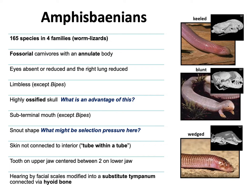Let's talk about the amphisbaenids. These are otherwise known as worm lizards, but they're neither worm nor lizard. They look like a worm, have rings around their body — they're annulate, meaning they have these segments. If you're living underground in the dirt with this sort of body, people are going to confuse you with an earthworm. We use the term 'fossorial' to describe an animal that lives underground.